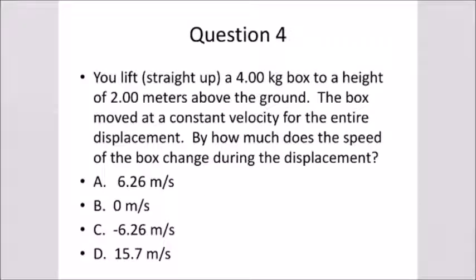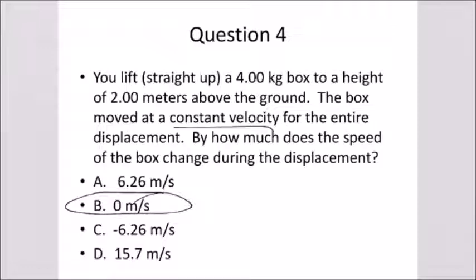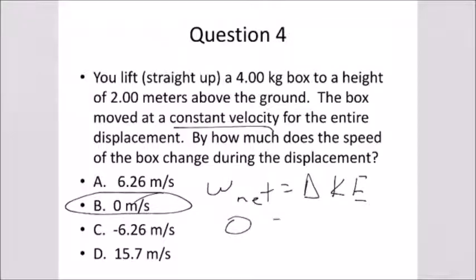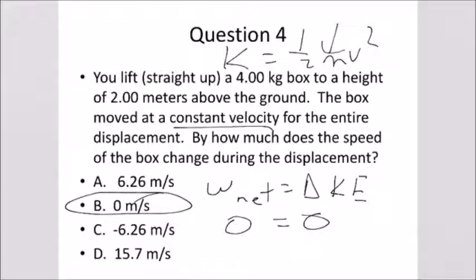Question four asks how much did the speed of the box change during the displacement. Again, since there's no net force, there's no net work. Net work equals change in kinetic energy, which is zero. Therefore the change in kinetic energy is zero. We know kinetic energy is one-half mv squared. The mass can't change, and in this case the velocity can't change either because there's zero change in kinetic energy.